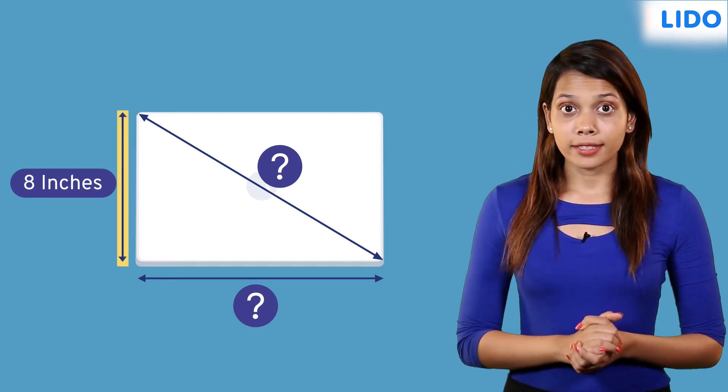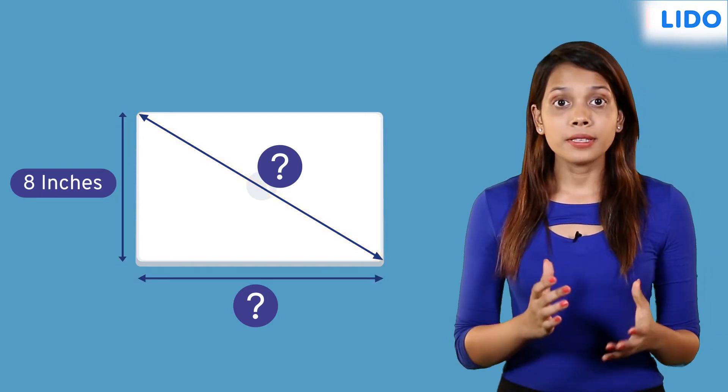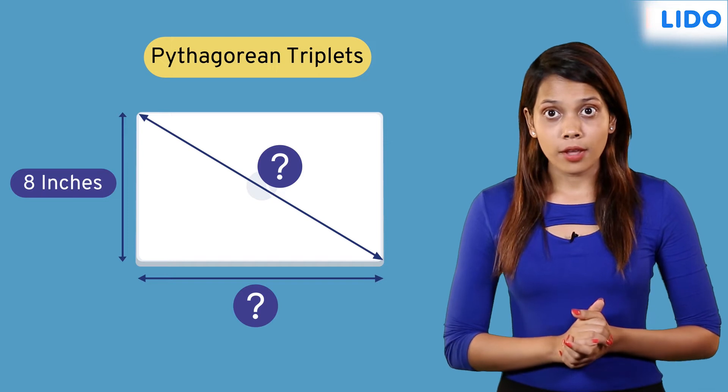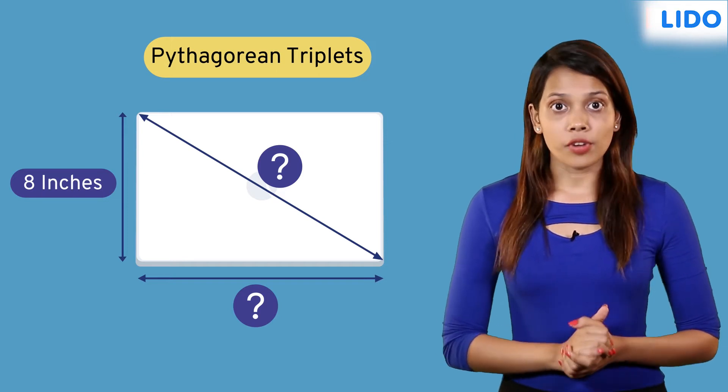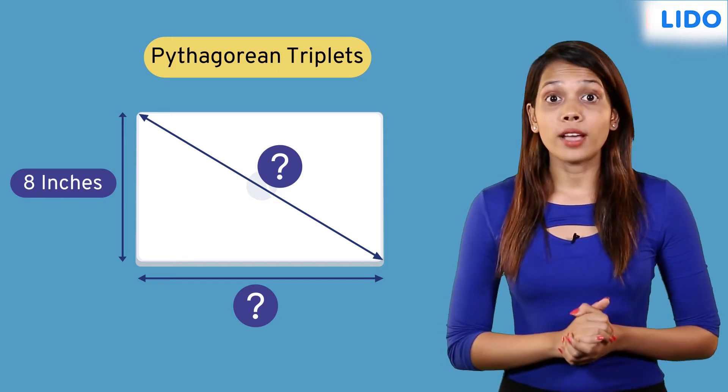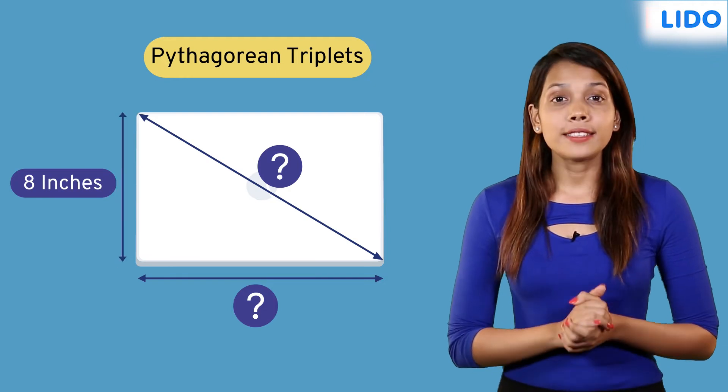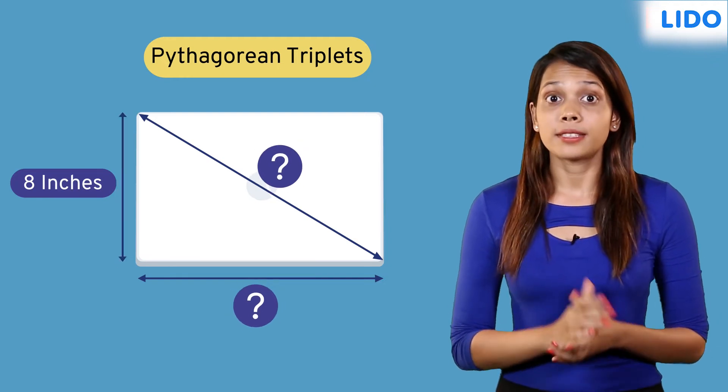The length of the height, width and diagonal must form a Pythagorean triplet for any given right angle triangle. And since we know the height is 8 inches, there's a trick to find the other two numbers in the triplet.